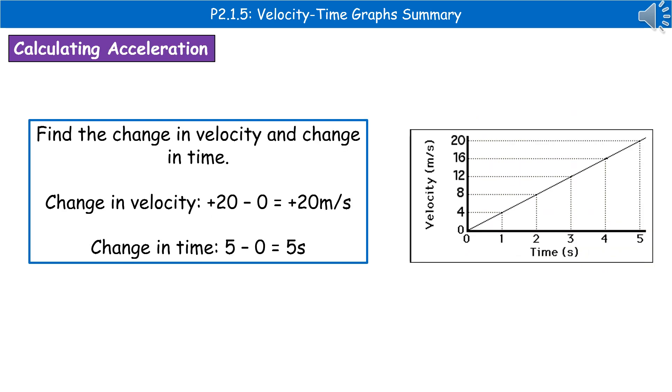If you were asked to find the acceleration, the first thing we need to do is find the change in velocity and the change in time from the graph. In this example, I've used a right-angled triangle going from 0 to 5 seconds. The change in velocity is +20 - 0 = +20, and the change in time is 5 - 0 = 5 seconds.